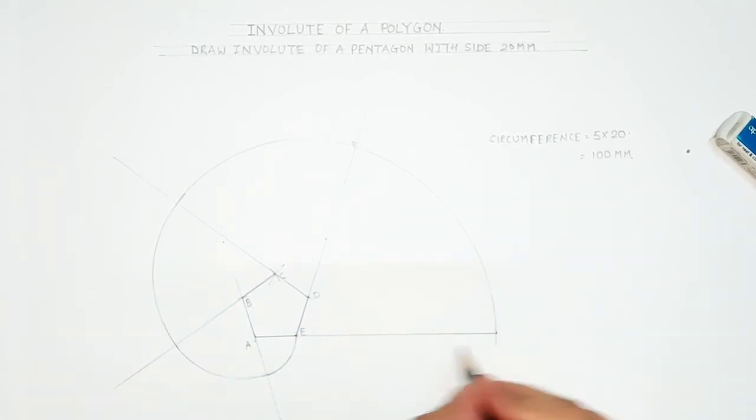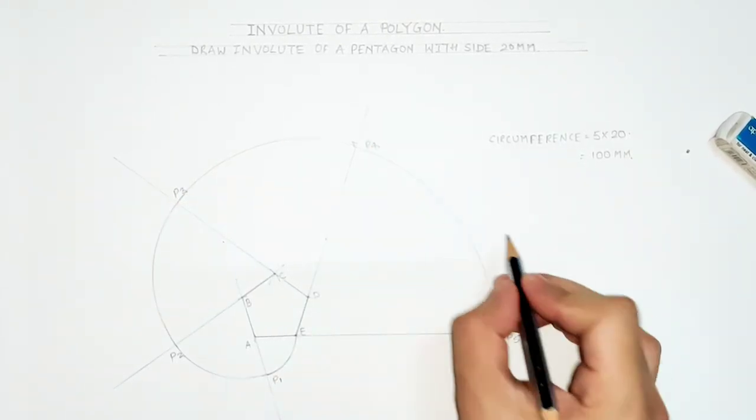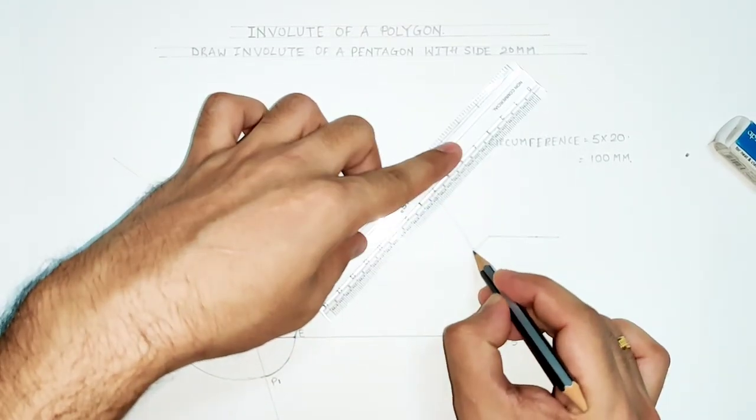Mark each point as P1 to P5, and the curve is involute of a pentagon.